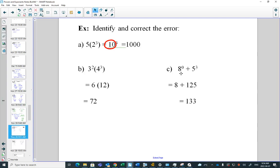So what would be the right way to do it? They should have done five times two cubed is eight, and the answer to this one was 40.